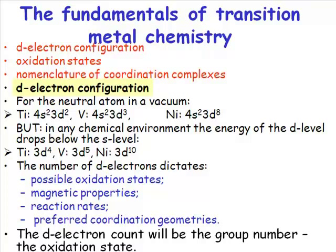So, let's start with the d-electron configuration. If you look at a neutral atom in a vacuum, now I cannot stress this point strongly enough. This is the electron configuration of a neutral atom in a vacuum. And the important point,